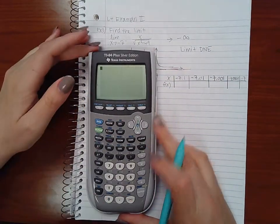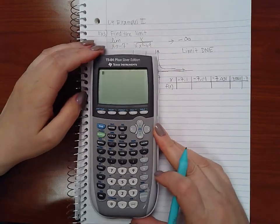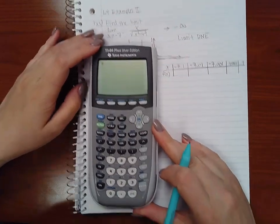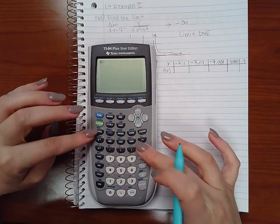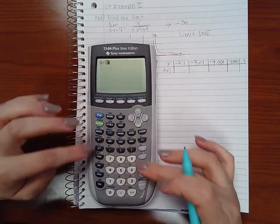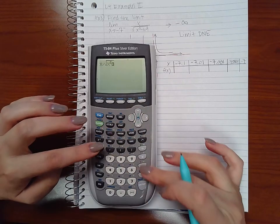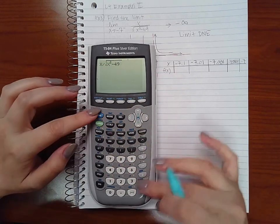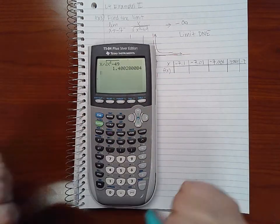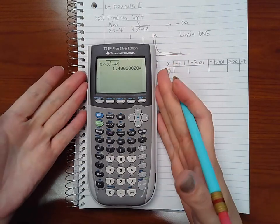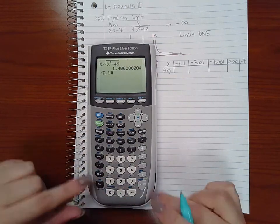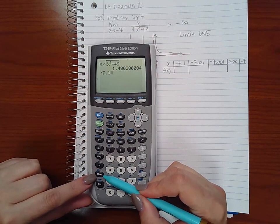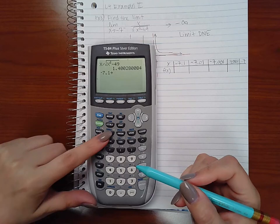What you do is you start plugging these into your function. So one way to do that is to use the storing capability of your calculator. If I type x over the square root of x squared minus 49 and I'm going to hit enter, but I'm going to ignore that first response because I don't know what the computer has stored as x.